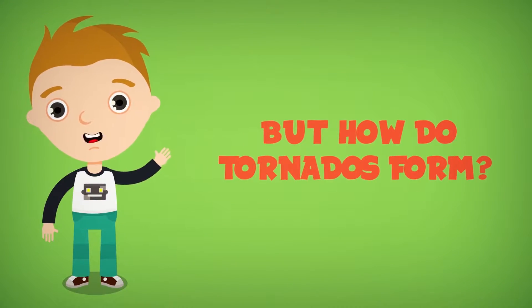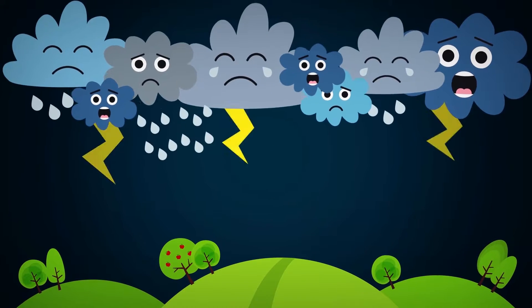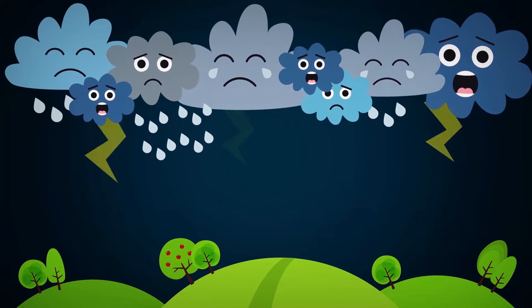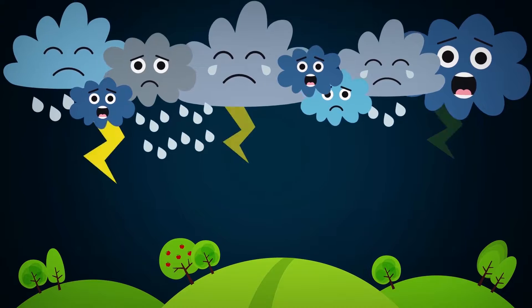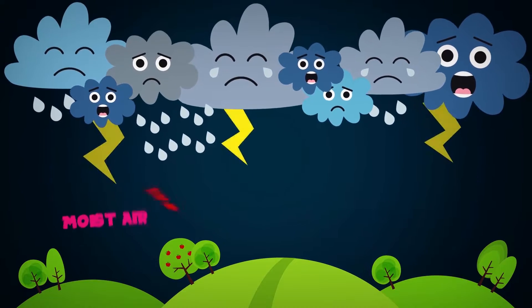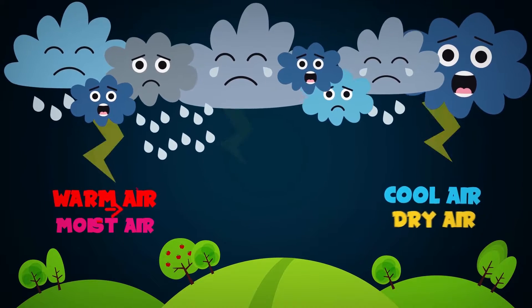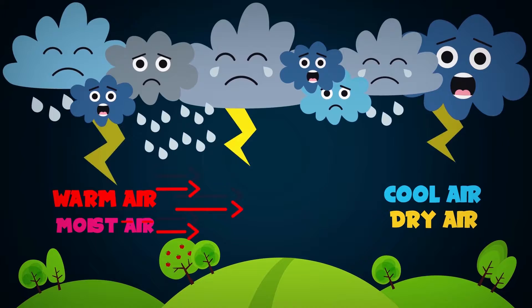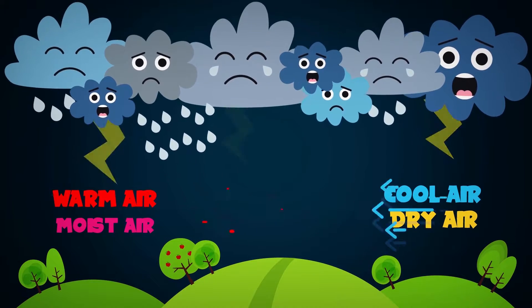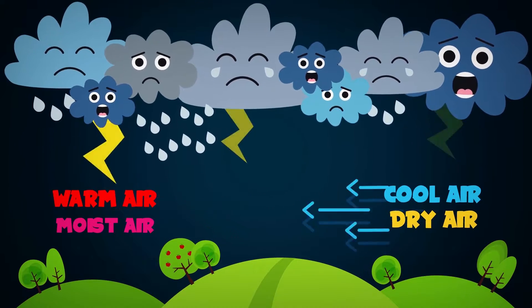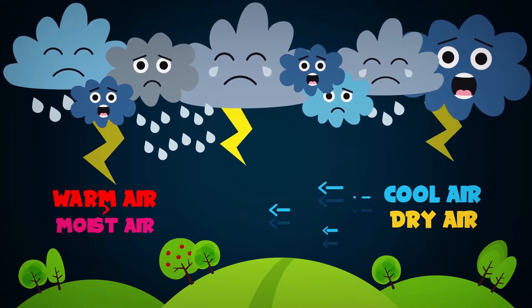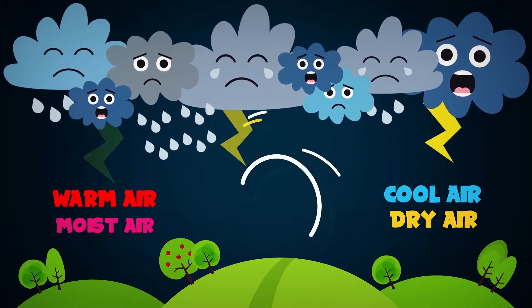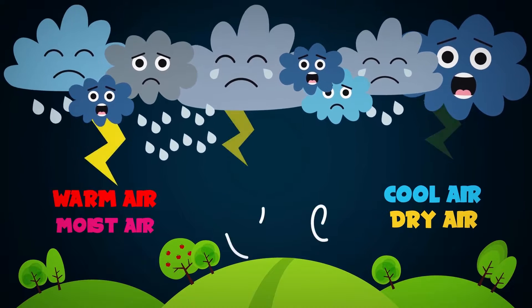But how do tornadoes form? Most tornadoes form from thunderstorms. You need warm, moist air and cold, dry air. When these two air types meet, they may start to form a tornado.